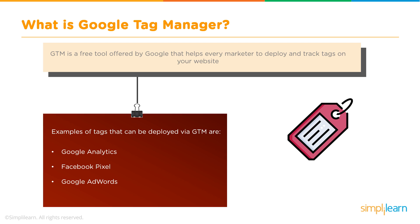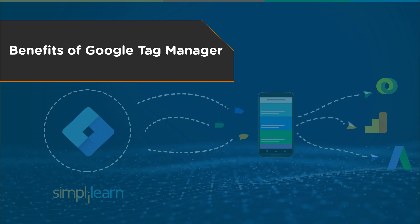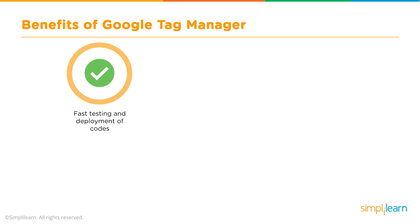Examples of tags that can be deployed via Google Tag Manager include Google Analytics, Facebook Pixel tracking, and Google Ads — and there's no limit to the number of tags you can track in Tag Manager. You can add any number of tracking tags.